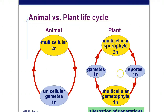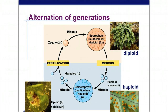So we have an alternation of generations. We alternate between the diploid part of the life cycle, if you're a plant, and the haploid part of their life cycle. Quick review — you learned this in Chapter 29 and 30. Here we have: zygote, diploid, undergoes mitosis, becomes the multicellular sporophyte. Meiosis produces haploid spores. Spores undergo mitosis to become the gametophyte. Gametophyte does mitosis to make the gametes. Gametes fuse together, become a diploid zygote again.